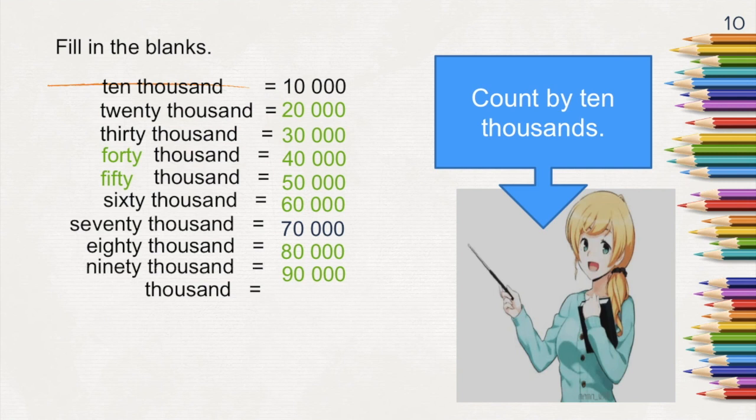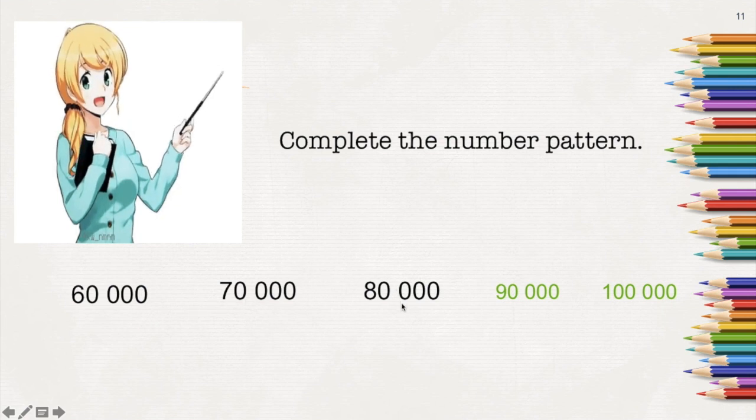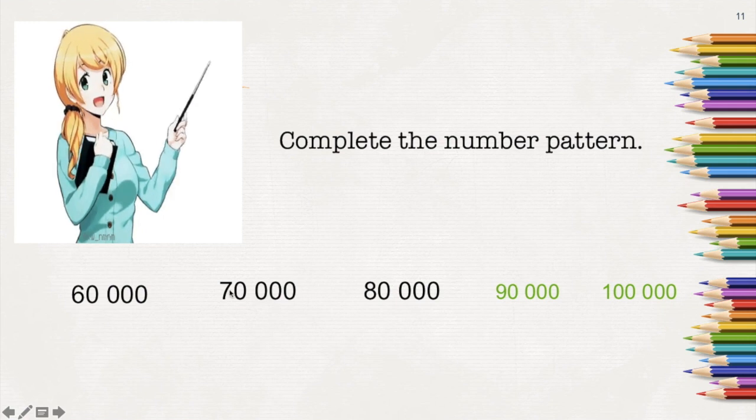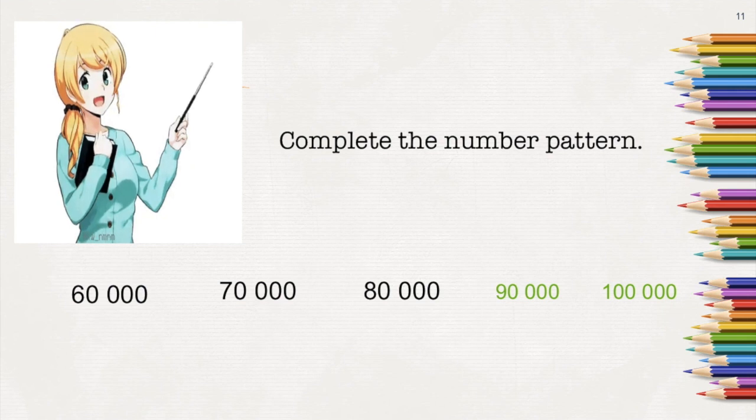What number comes after 90,000? Try completing this number pattern: 60,000, 70,000, 80,000. So if we notice, the difference is 10,000. The difference between the first number and the second number is 10,000. So counting forward, we have 70,000, 80,000, 90,000, and 100,000.